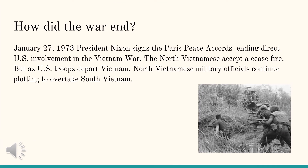How did the war end? On January 27, 1973, President Nixon signed the Paris Peace Accords, ending direct US involvement in the Vietnam War. The North Vietnamese accepted a ceasefire, but as US troops departed Vietnam, North Vietnamese military officials continued plotting to overtake South Vietnam.